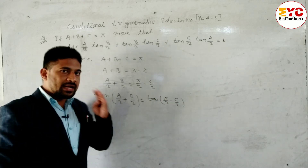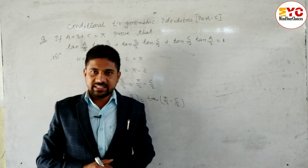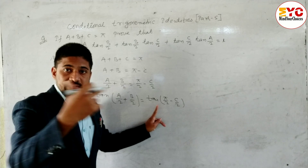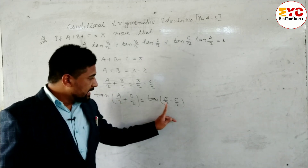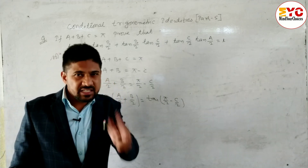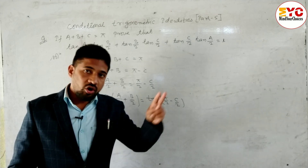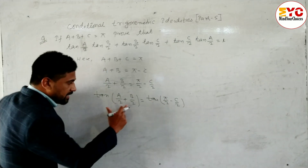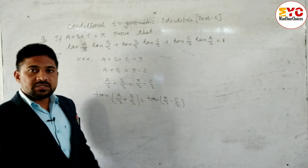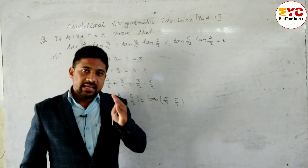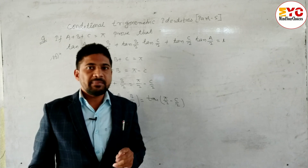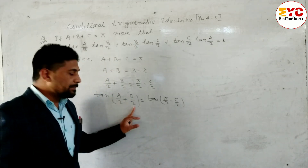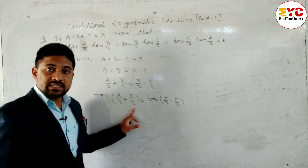Now pi/2 means 90 degrees, and tan(90 minus c/2) means we change tan to cot — in the first quadrant all are positive. We apply the tan addition formula: tan(A+B) equals tan A plus tan B divided by 1 minus tan A tan B. Here A is a/2 and B is b/2.